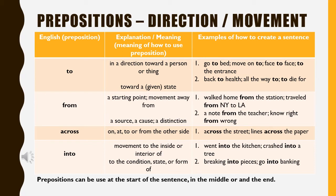'From' can also show a source, cause, or distinction — examples: learned from the teacher, know right from wrong. Preposition 'across' is used to show on, at, to, or from the other side — example: across the street, line across the paper. Preposition 'into' is used to show movement to the inside or a change of condition, state, or form — examples: went into the kitchen, crash into a tree, breaking into pieces, go into banking.